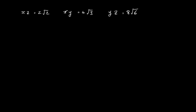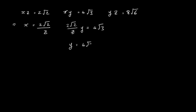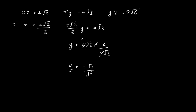Starting with the first equation, x times z = 2√2, I'll get x on its own: x = 2√2 over z. Substituting that into our second equation gives us (2√2 / z) times y = 4√3. Dividing, y = 4√3 multiplied by z over 2√2, which simplifies — 2 divides into 4 twice — leaving y = 2√3 over √2 times z.